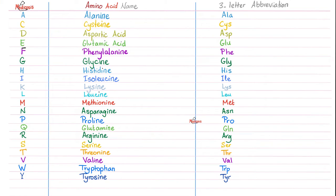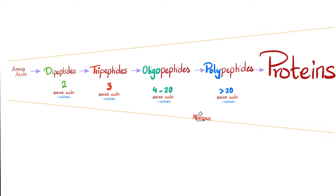Tell me about the 20 proteogenic amino acids. Each one has a name, a one-letter abbreviation, and a three-letter abbreviation. Today we're talking about cysteine, because if you combine two cysteines together, what do you get? Cystin. When I have cysteine accumulating everywhere throughout the body, you call this cystinosis. Recall that two amino acids together form dipeptides, then tripeptides, a bunch form oligopeptides, many form polypeptides, and a lot form proteins.